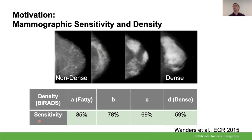If you do a study, and these numbers are fairly typical, where you look at the sensitivity of screening mammography in the fatty breast, we find a lot of the cancers that are there. But when we look at the dense breast, the sensitivity goes way down. Depending on jurisdictions and different screening programs, these numbers may vary a little bit, but you see this consistent trend where in the dense breast, mammography just doesn't do as well.